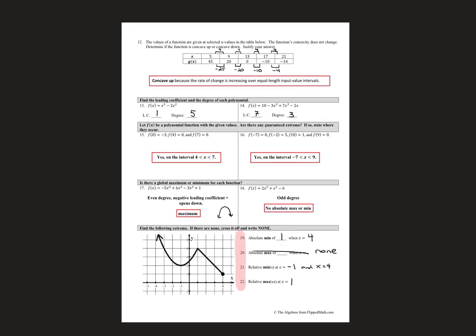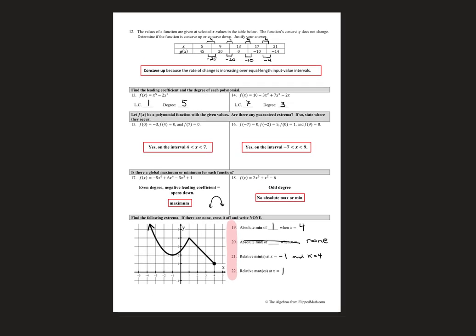Page three. Now we got into concave up and down from a table, leading coefficient and degree, whether there's a guaranteed extrema, global min and max, and then the graph where you're finding absolute, relative min and max.